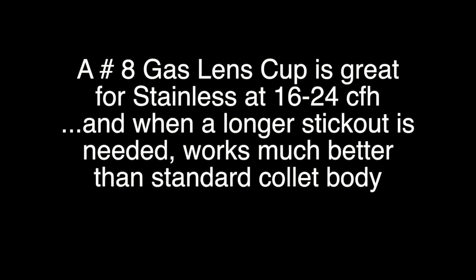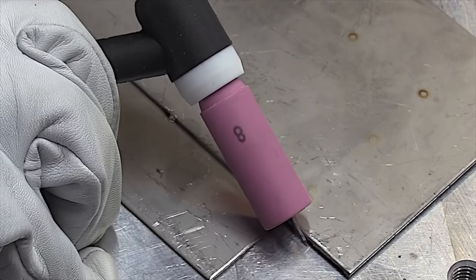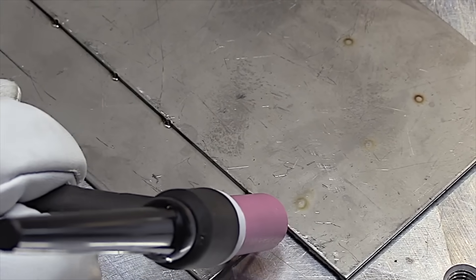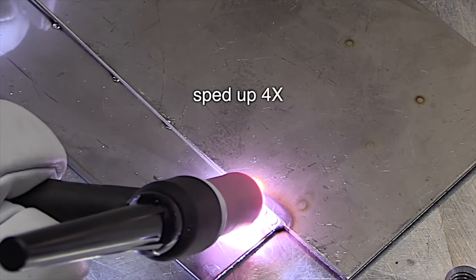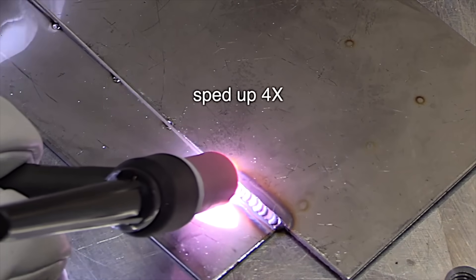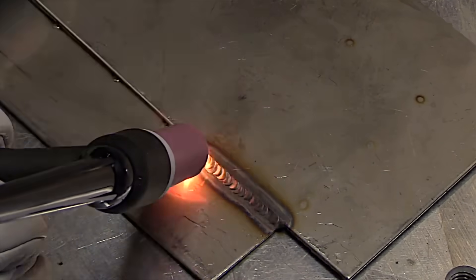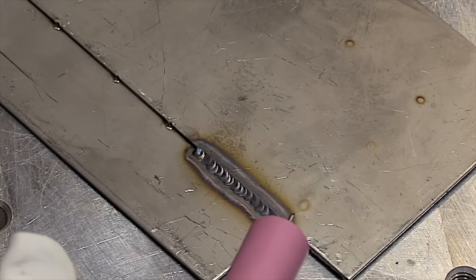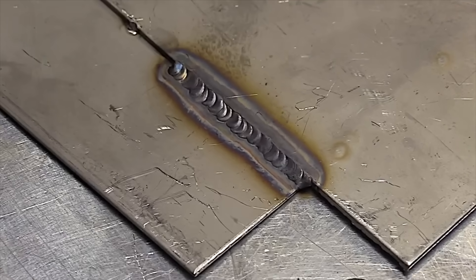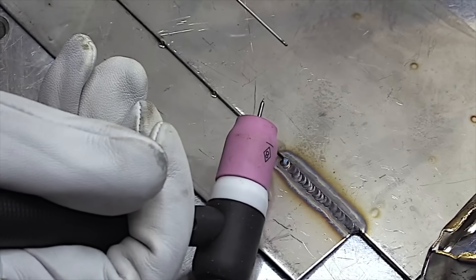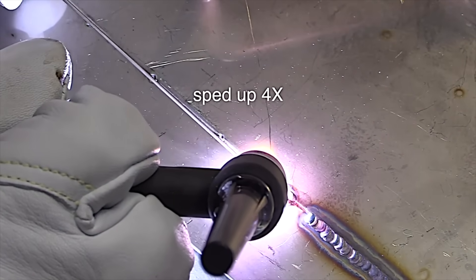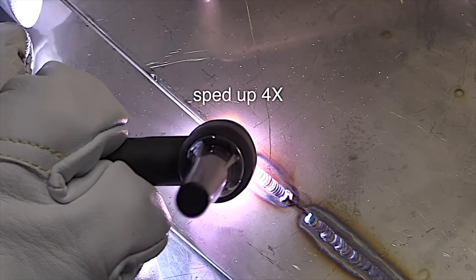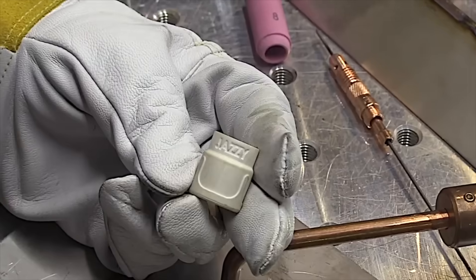This little demonstration really shows the difference between the standard hardware that comes with a TIG torch as opposed to a stubby gas lens. I'm using the same long stick out here. It's a half inch stick out. I'm going to use the same stick out on all these cups. This is sped up 4x but you can see it's just kind of squiggly. I'm losing shielding at that stick out at about 20 CFH. Not very good for stainless steel. Now here I'm using the same exact stick out with the same flow rate with a stubby gas lens and it's like somebody flipped a switch on. Now all of a sudden it's cleaned up.